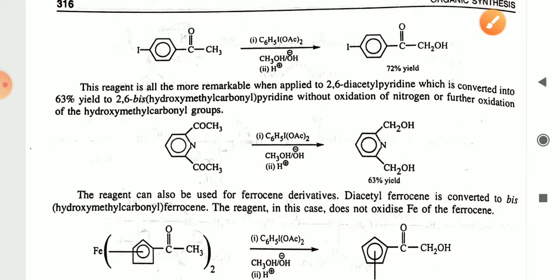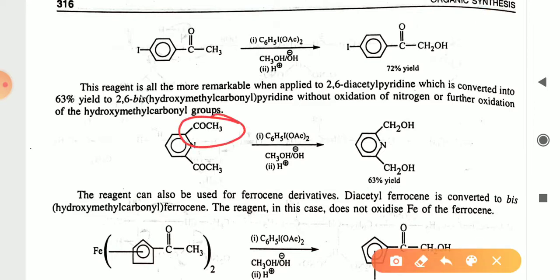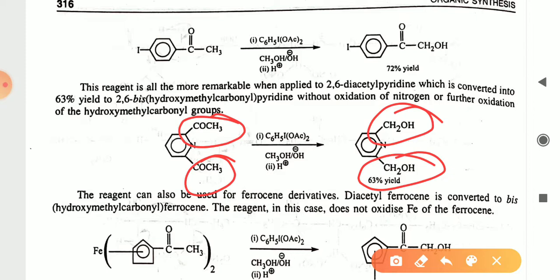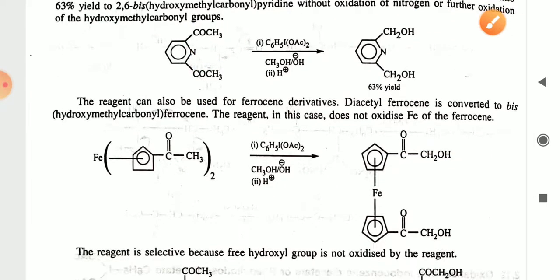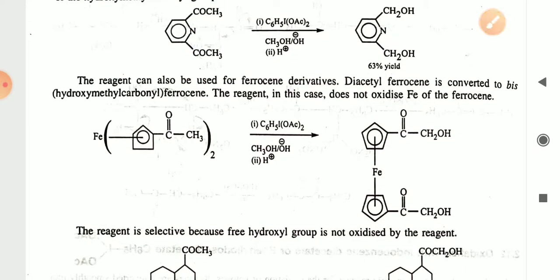This kind of reagent is remarkable when applied for 2,6-diacetylpyridine, which is converted in 63% yield into 2,6-bis(hydroxymethylcarbonyl)pyridine without further oxidation of the nitrogen or the hydroxymethylcarbonyl group. Simply the COCH₃ groups are converted into CH₂OH groups. The reaction will not further oxidize and will not oxidize the nitrogen itself. So this reagent can also be used for ferrocene derivatives.